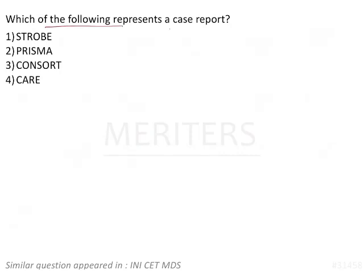Which of the following represents a case report? The options given are STROBE, PRISMA, CONSORT, and CARE. Each one is an acronym that carries a different meaning and full form, and each is specific to a particular set of research studies. We will go through them one by one and arrive at the answer.